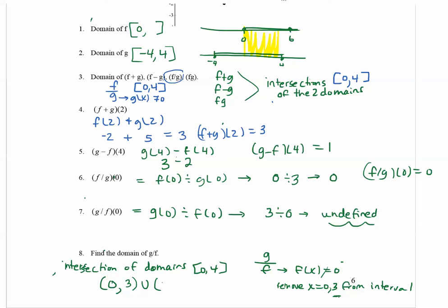Union, and I'm going to pick up again with 3, and I'm going to finish the interval to 4. And I keep the brackets on the 4 because 4 was not restricted. So this is going to be the domain of g divided by f when you take out the restrictions of 0 and 3 from that interval.